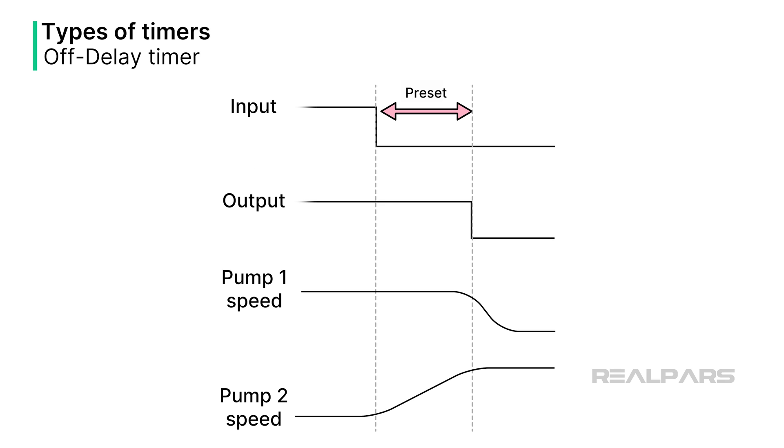When transferring operation from a primary feed pump to a secondary feed pump, an off-delay timer can be used to delay off the primary, while the secondary has a chance to ramp up to speed. This keeps the primary pump on for the preset time, preventing a loss of flow during the transition period.